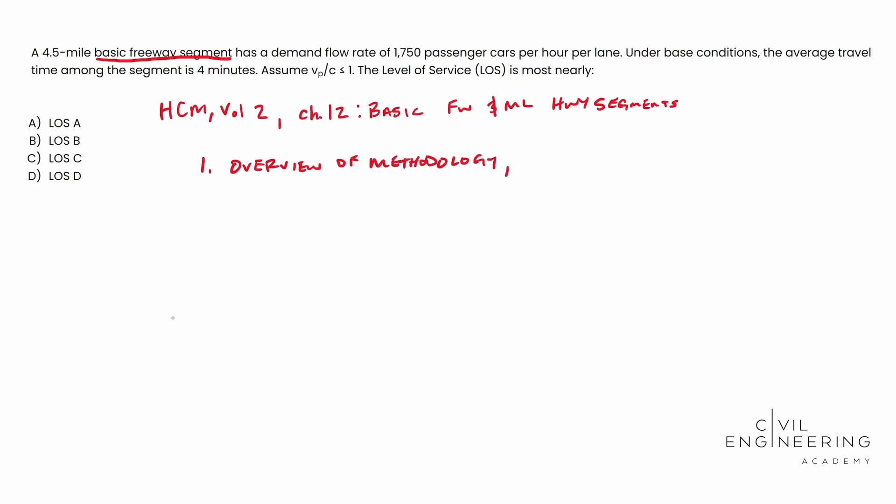And then when you scroll to that step, you'll notice that exhibit 12-15 is used to solve for the LOS. And so that's going to be step number two. Whenever you're scrolling, you'll notice exhibit 12-15 is going to be useful for us. All right. And then once we get to that exhibit, we'll notice that it requires density to solve for the LOS and that's passenger cars per hour per lane. So we need to solve for density. So that's step number three is solve for density.